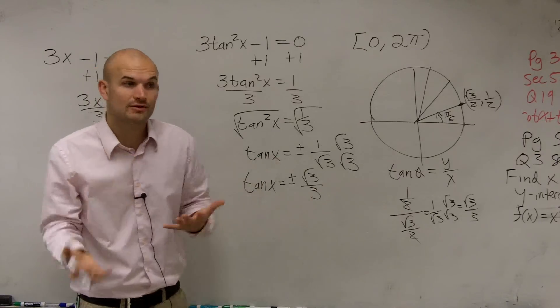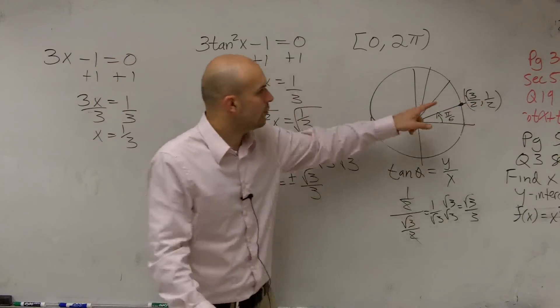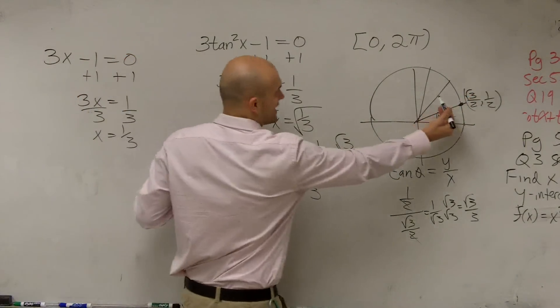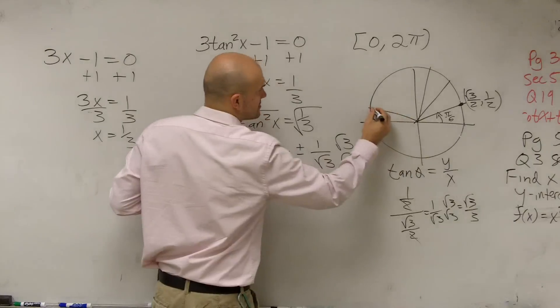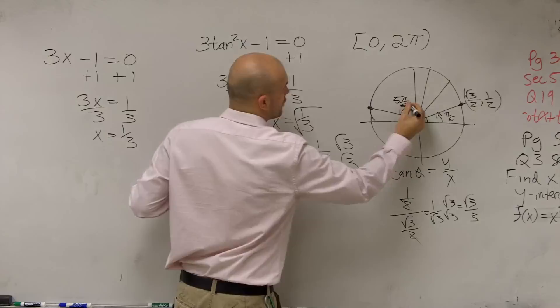Then, if we go around the rest of the unit circle, what other points are going to have 1 half over square root of 3 over 2? And remember, it can be positive or negative. So our next angle, reflecting over the y-axis, is going to be 5π over 6, where that is a negative square root of 3 over 2 comma 1 half.